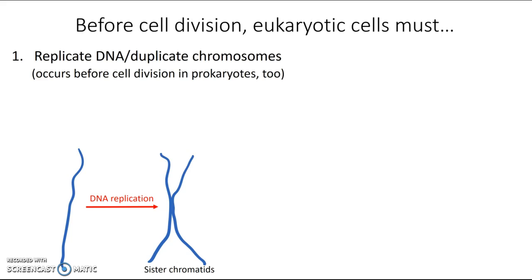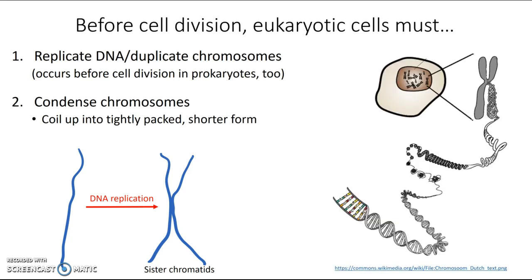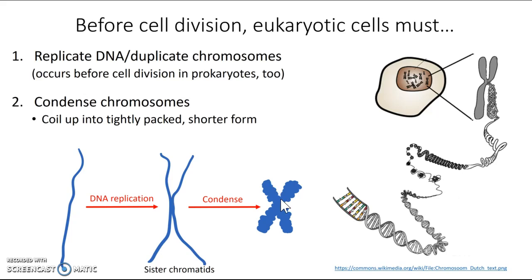But not only does it have to replicate, it also has to condense those chromosomes, because these chromosomes are really long and stringy and there are lots of them. It's going to be difficult to separate them all neatly. So in this condensing process, they coil up into a tightly packed, shorter form. In this diagram, we can see that double helix of DNA winding and coiling itself up into a really tightly packed form. Chromosomes are often shown in this form in textbooks because it's the only time we can see them under the microscope.